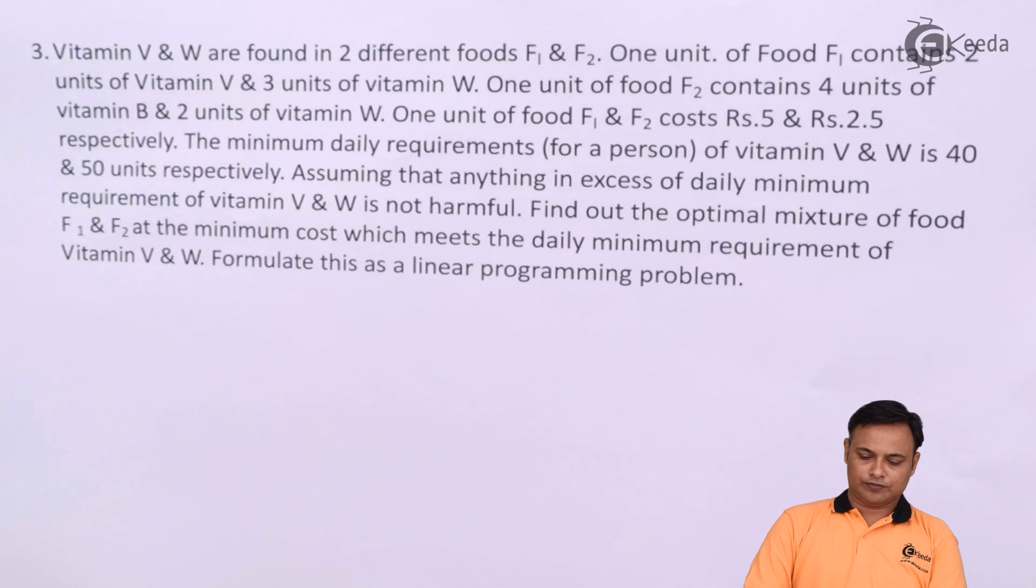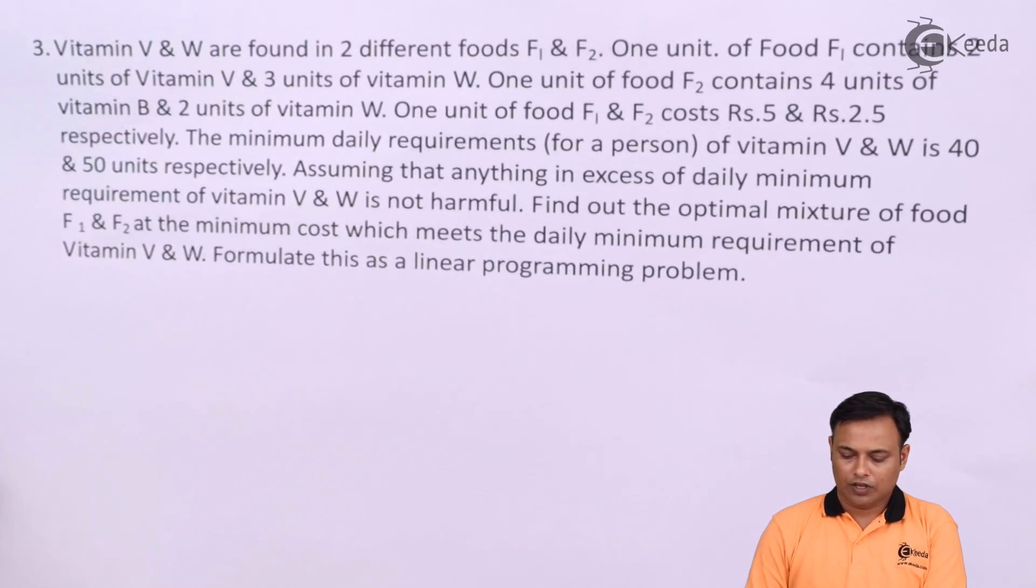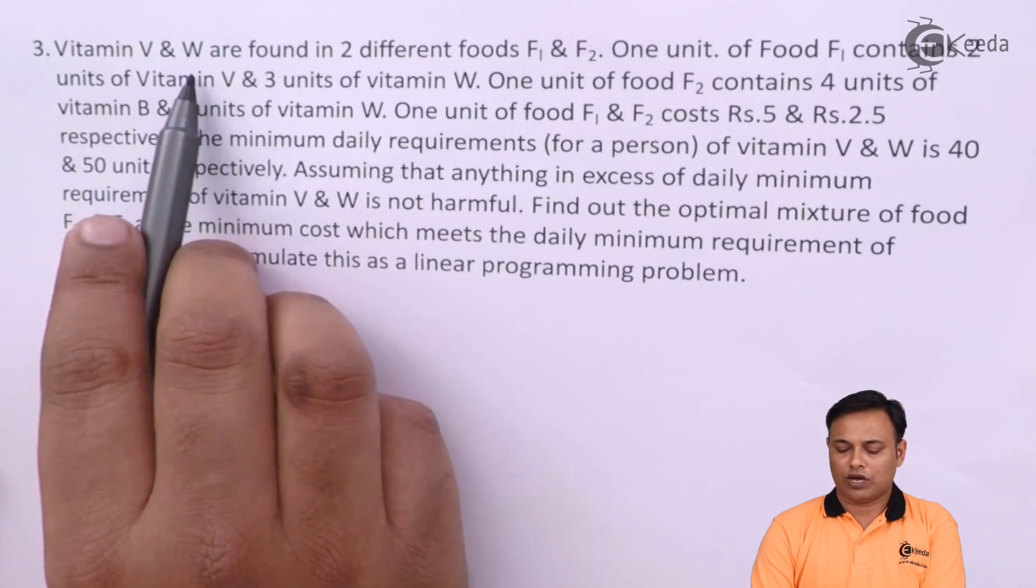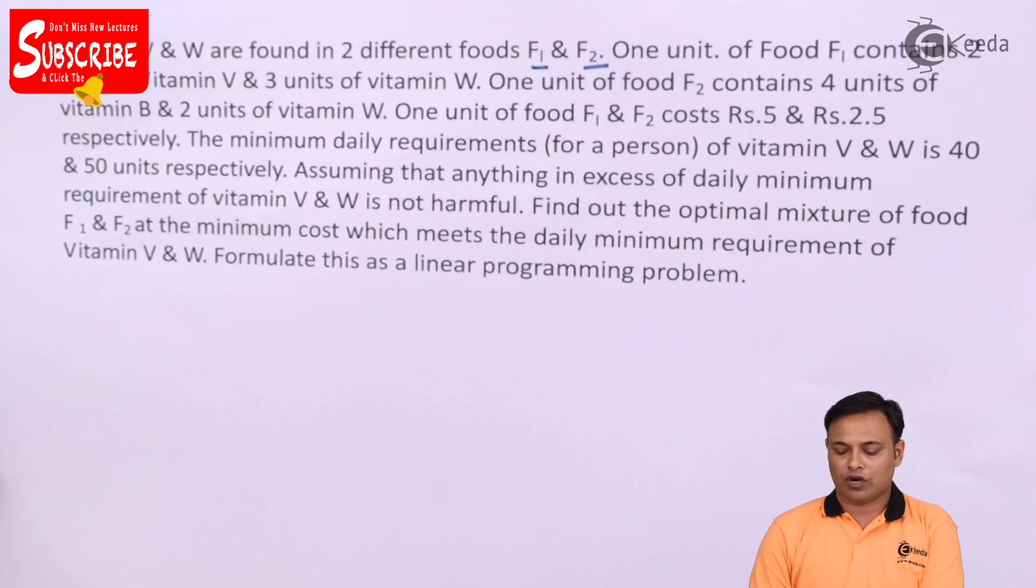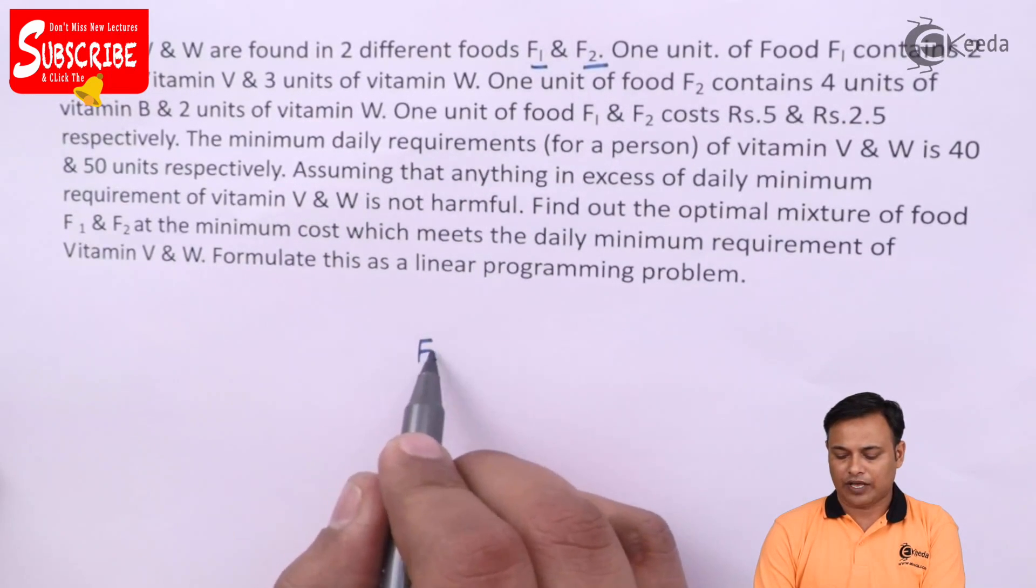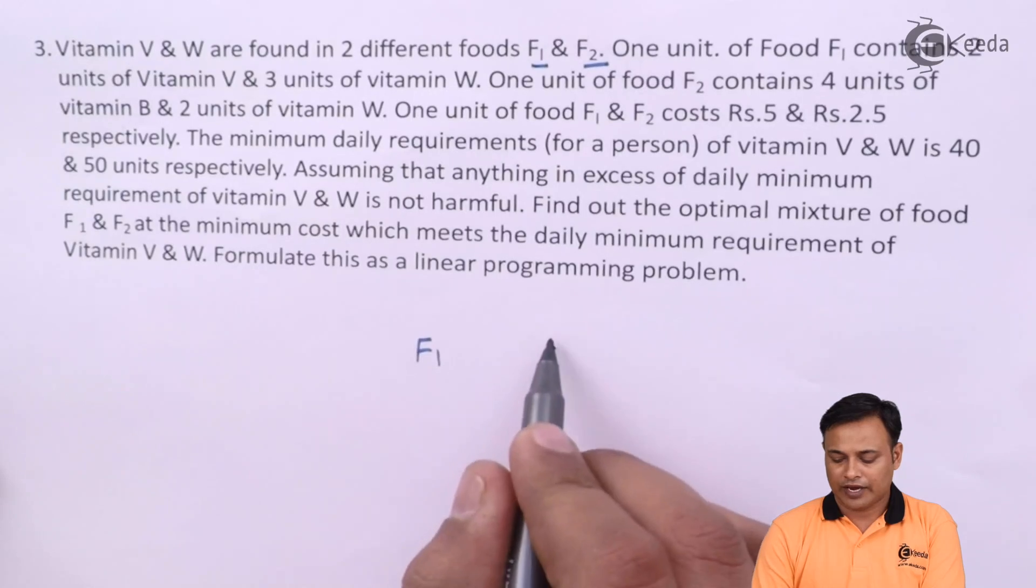Let's see the problem. Vitamin V and W are found in 2 different foods F1 and F2. So, we have got 2 different foods F1 and F2.